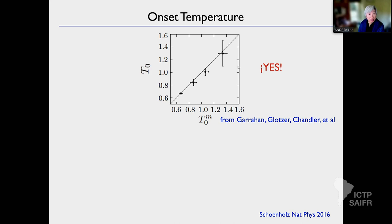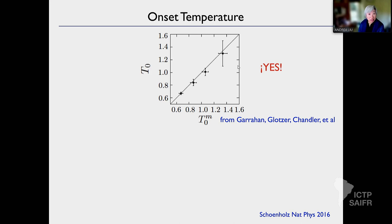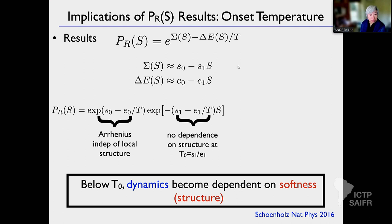Let me go back a little bit. I'm just going to pick up where I left off yesterday. So yesterday I talked about how for particles of a given softness, the probability of rearranging is Arrhenius for a given softness. There's a well-defined energy and entropy barrier for each softness. So today, what I'm going to talk about is how we use that — we're going to take that as given.